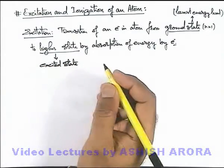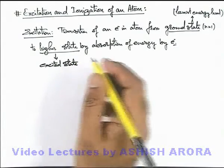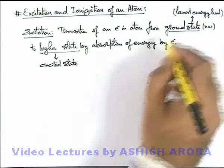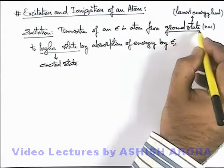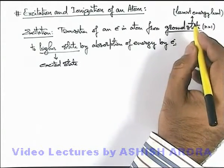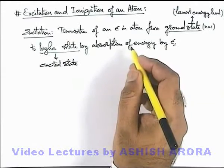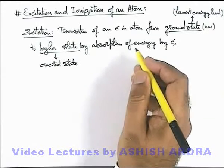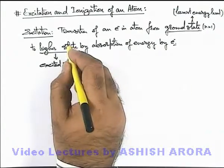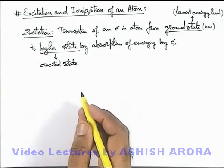In the case of a hydrogenic atom, the only electron available in the atom will remain in n equal to 1 or ground state. But if it is not hydrogenic, then the electron in any outer level may excite to any higher level — that phenomenon will also be considered as excitation.